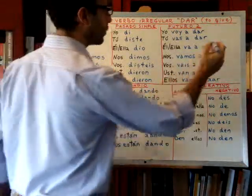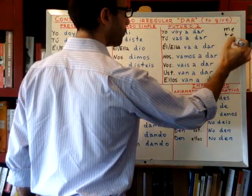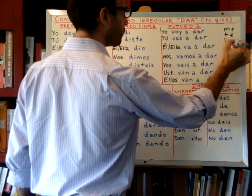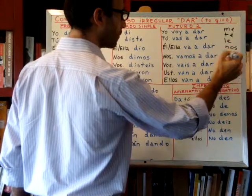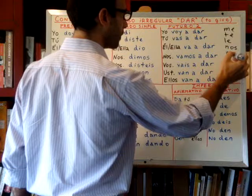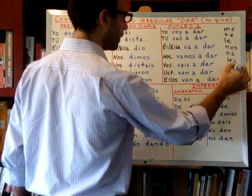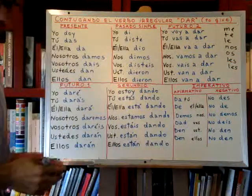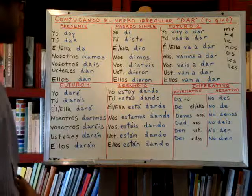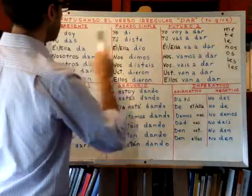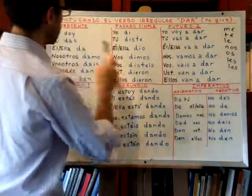Here are the indirect object pronouns: me for me, te for you, le for him or her, nos for us, os for you (Spanish you), les for Latin American you plural, and les again for them. So if I want to say 'I give you,' I say yo te doy. If I want to say 'I give them,' I say yo les doy.